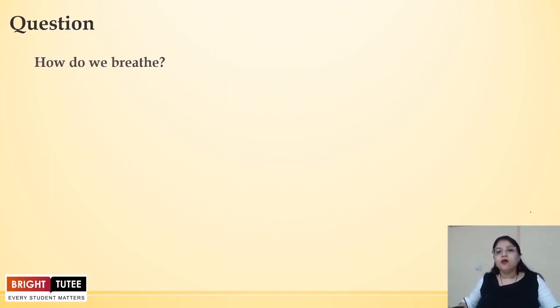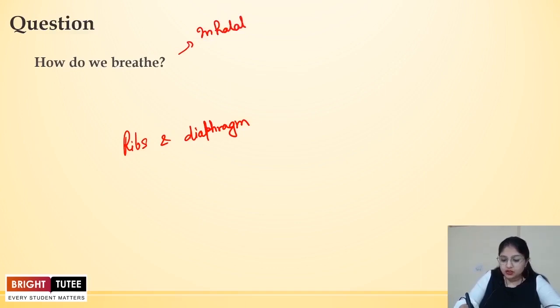How do we breathe? Now this is a process which involves two basic steps: first is inhalation and other is exhalation. In inhalation and exhalation both, we see that there is an involvement of ribs and diaphragm. These are the two processes that are involved in breathing.